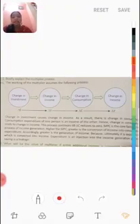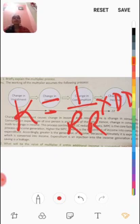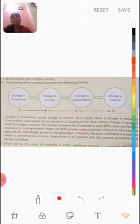Don't get confused — there are two multipliers in this book. The first is the money multiplier, also shown by k, which equals one upon RR, related to demand deposits and credit creation by commercial banks (covered in chapter 6 on banking).